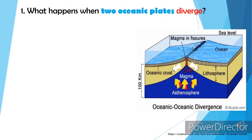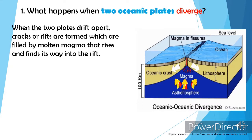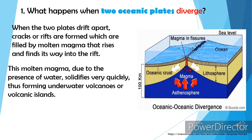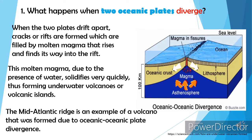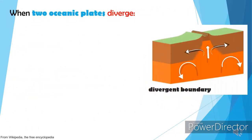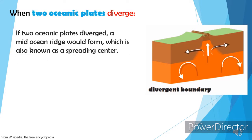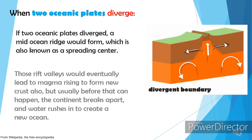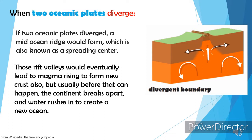What happens when two oceanic plates diverge? When the two plates drift apart, cracks or rifts are formed, which are filled by molten magma that rises and finds its way into the rift. This molten magma, due to the presence of water, solidifies very quickly, forming underwater volcanoes or volcanic islands. The Mid-Atlantic Ridge is an example of a volcano formed due to two oceanic plates diverging. If two oceanic plates diverge, a mid-ocean ridge forms, also known as a spreading center.